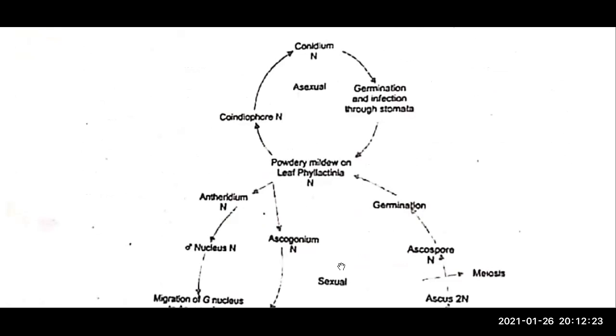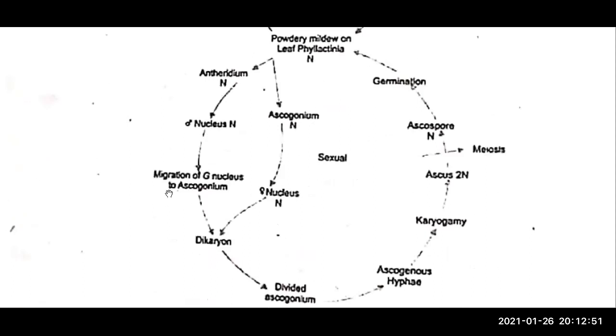In this life cycle, you can see that both sexual reproduction and asexual reproduction are represented. Germination and infection through stomata produce the powdery mildew on the leaf. Phylactinia then produces conidiophores and conidia — this is asexual reproduction. In sexual reproduction, the powdery mildew leaf produces anthridia, which is the male sex organ, and the haploid nucleus migrates into the ascogonium.